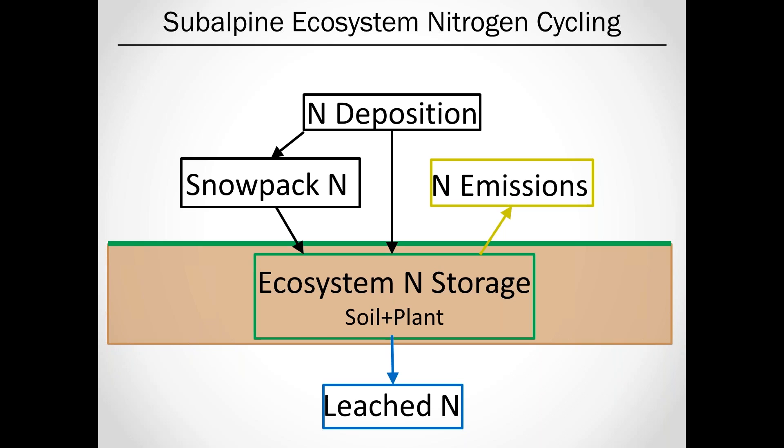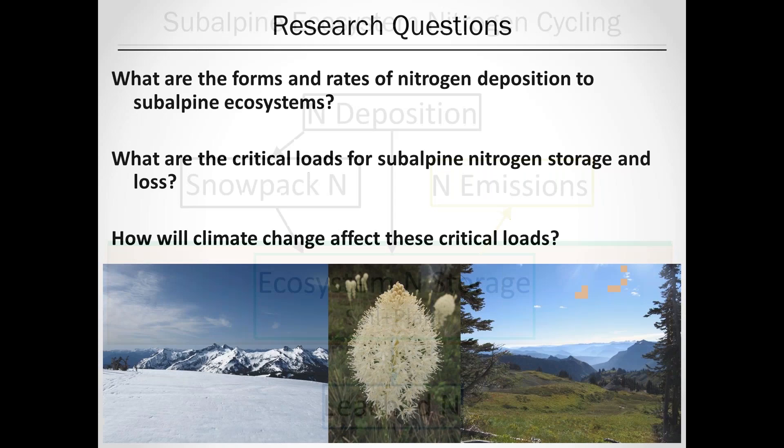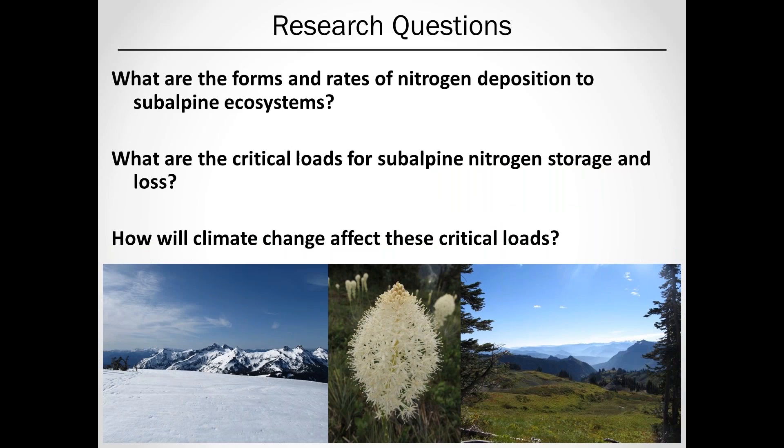The questions I wanted to answer with my research were: what are the forms and rates of nitrogen deposition to subalpine ecosystems, and how do these differ from other low-elevation ecosystems in the Northwest? What are the critical loads for subalpine nitrogen storage and loss? And then, how will climate change affect these critical loads and the system's response to elevated rates of nitrogen deposition? I'll start with the first question, looking at the forms and rates of nitrogen deposition.